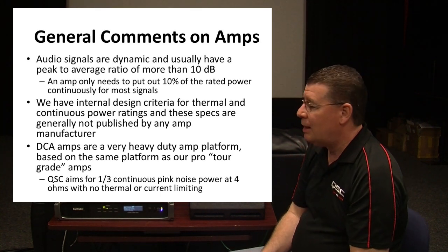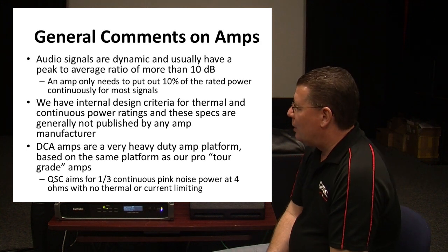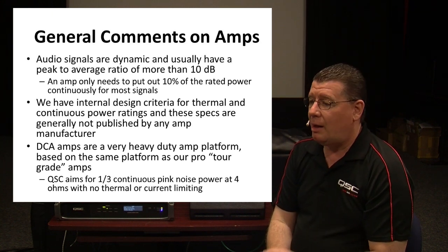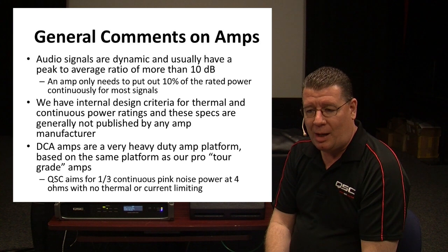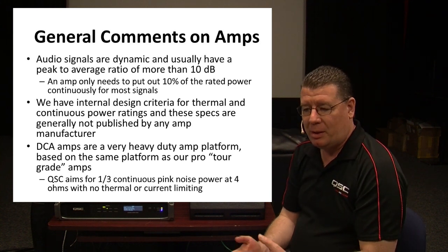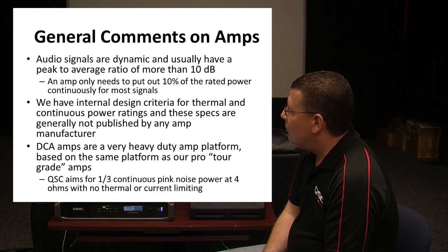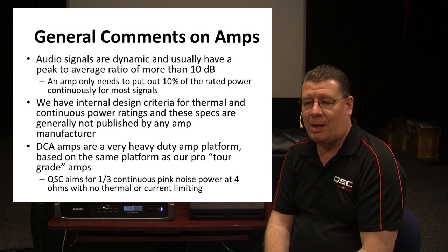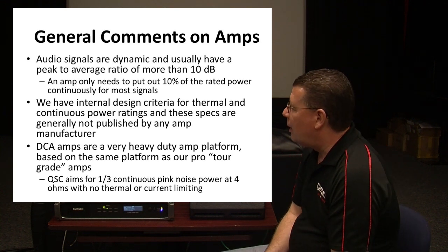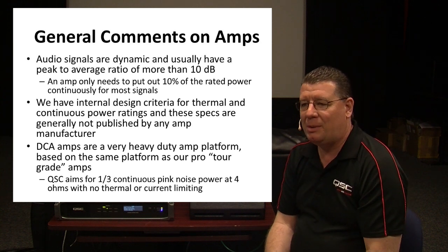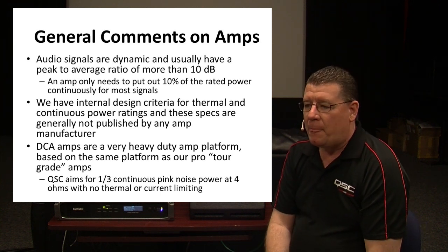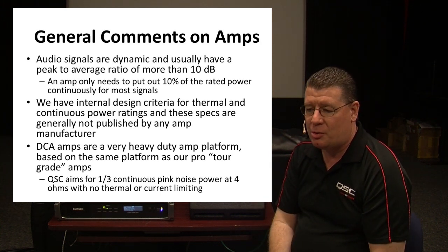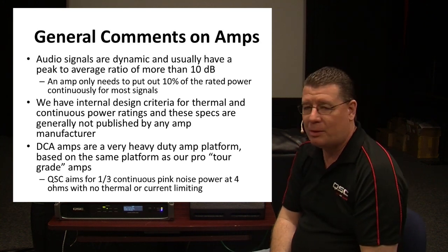With normal audio material, it's very common to have dynamic range in excess of 10 dB. Since 10 dB represents 10 times the power, if an amplifier were reproducing a peak of 1,000 watts, it would only be reproducing 100 watts on average — that would be the actual continuous power. When we design an amplifier, we have to take into account thermal performance, how well it can dissipate heat, and the continuous current supplied to the load. As long as the thermal capacity and current capacity support the total voltage swing with program material, the amplifier will perform extremely well.